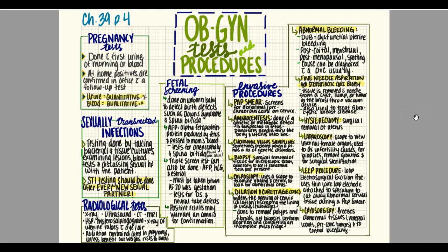A fine needle aspiration — also known as a stereotactic core biopsy — involves removing tissue with a needle from a cyst, lump, or tumor in the breast through a vacuum device. This is used to treat fibrocystic breast disease, where the breasts contain fibrous tissue or cysts. The tissue is suctioned up to break up the fibrous bands and reduce lumps or tightness.